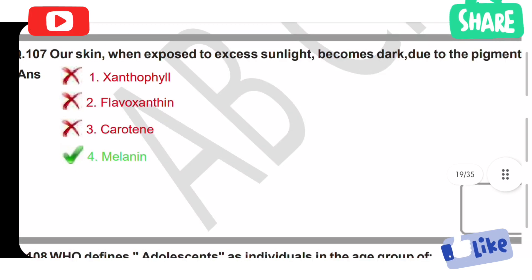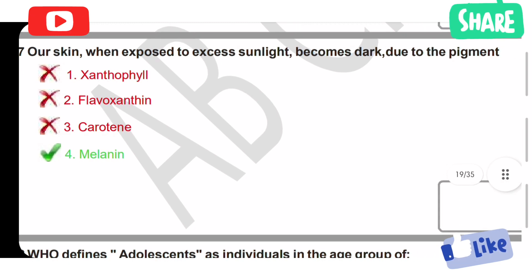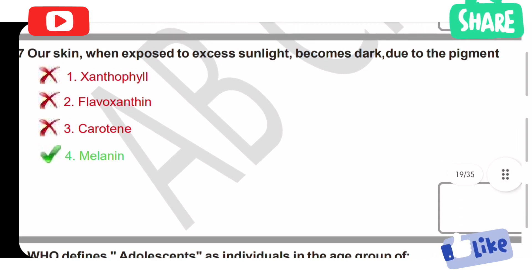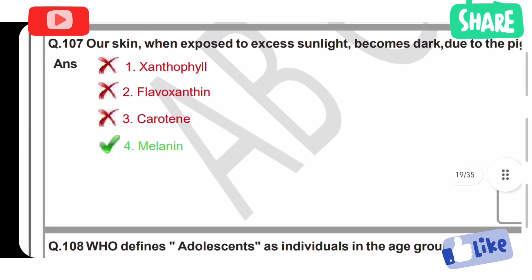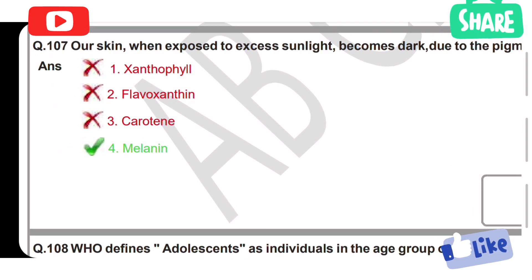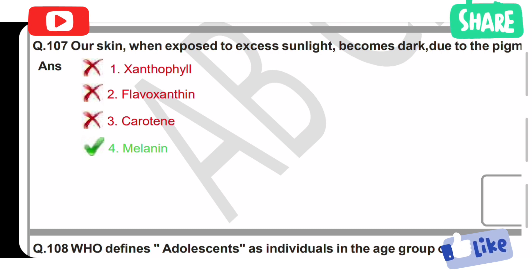Our skin, when exposed to excess sunlight, becomes dark due to the pigment. The options are: xanthophyll, flavoxanthin, carotene, and Option 4: melanin. Melanin is the correct answer — because of melanin, your skin will change to a dark color.